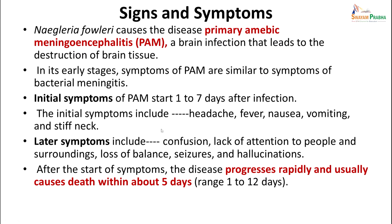Signs and symptoms of primary amoebic encephalitis: in the early stages the patient will have signs and symptoms similar to any bacterial meningitis, usually starting within one to seven days. Initial symptoms include headache, fever, nausea, vomiting, and stiff neck. Later symptoms include confusion, lack of attention to surroundings, loss of balance, seizures, and hallucinations. After the start of symptoms, the disease progresses rapidly and usually causes death within a week, sometimes in as few as 5 days, ranging from 1 to 12 days.